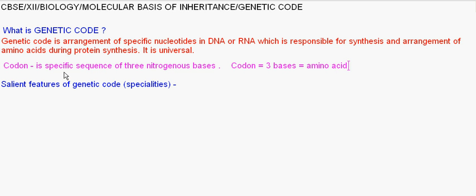So now coming to the salient features or specialties of genetic code. First one, as I told, in genetic code codons are triplet. So there are 64 codons which code for amino acids.